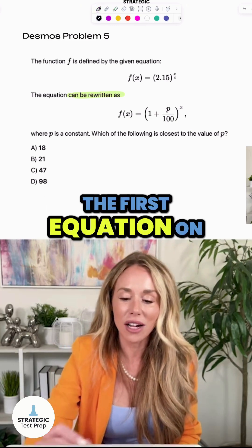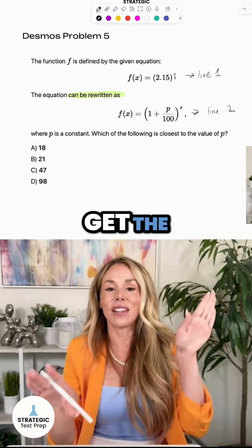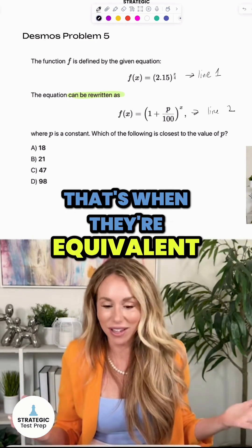the first equation on line one, you can put the second equation on line two in Desmos, and get the graphs to perfectly overlap. That's when they're equivalent.